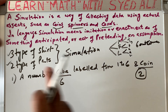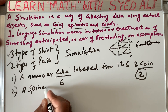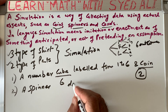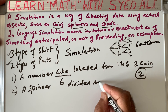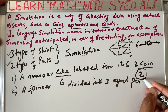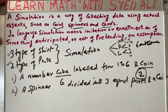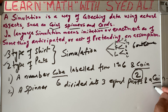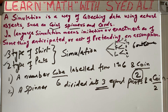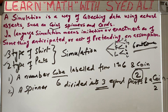So Statement A cannot be the simulation for this situation. Now Statement B: a spinner divided into 3 equal parts and a coin. The coin has 2 faces — head and tail. The spinner is divided into 3 equal parts. So the total number of outcomes matches our situation. This spinner-and-coin combination can enact or represent our situation, making it the correct simulation statement.